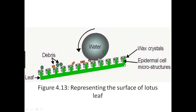Looking at the structure, we can see the epidermal cell microstructures shown as green blocks, along with debris and wax crystals. These micro and nanostructures ensure a higher contact angle. When water falls on the leaf, it forms a droplet because there is no attachment — the surface repels the water, causing it to form a drop and fall off, taking the dirt with it.